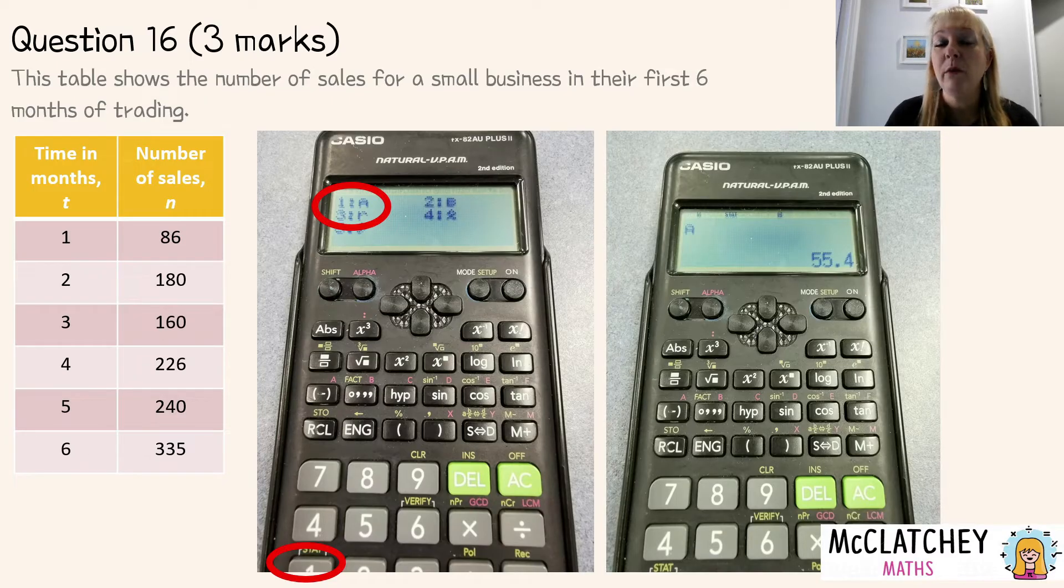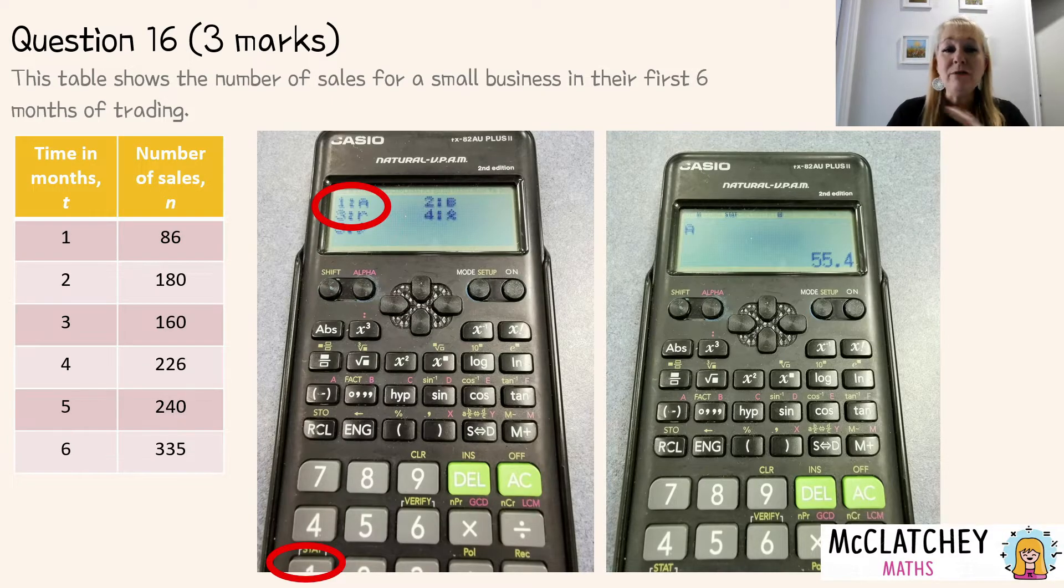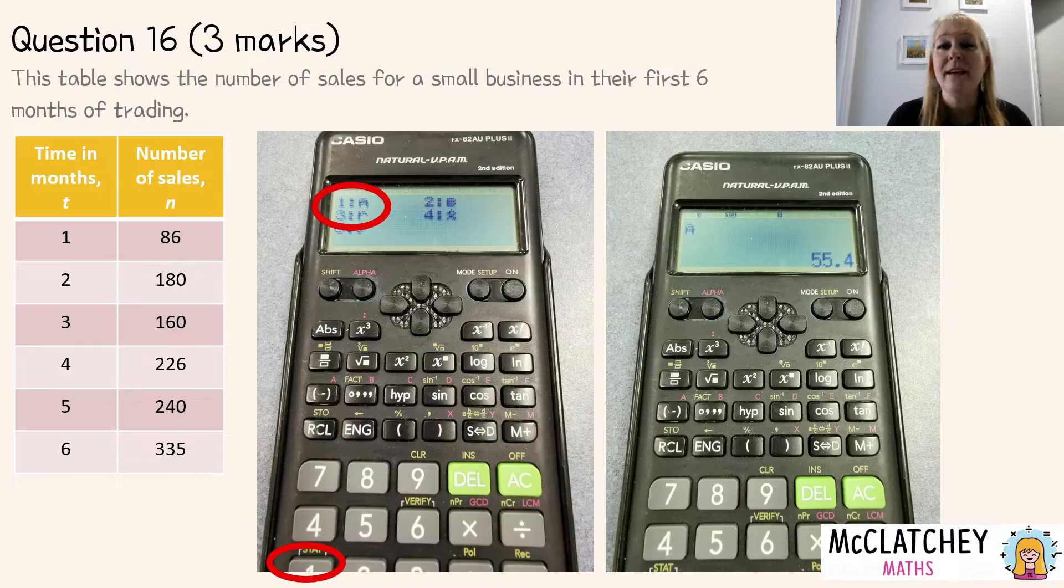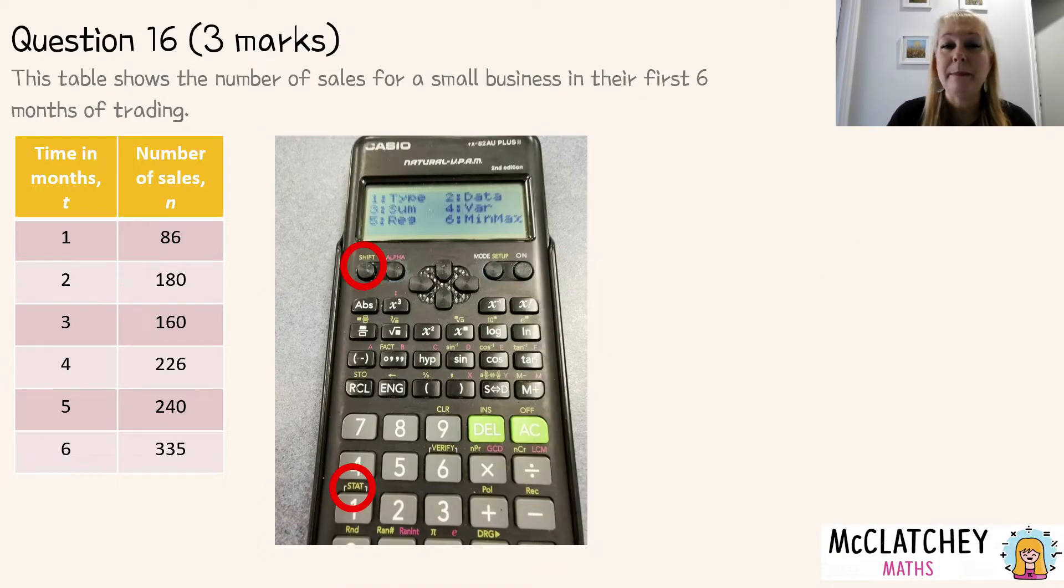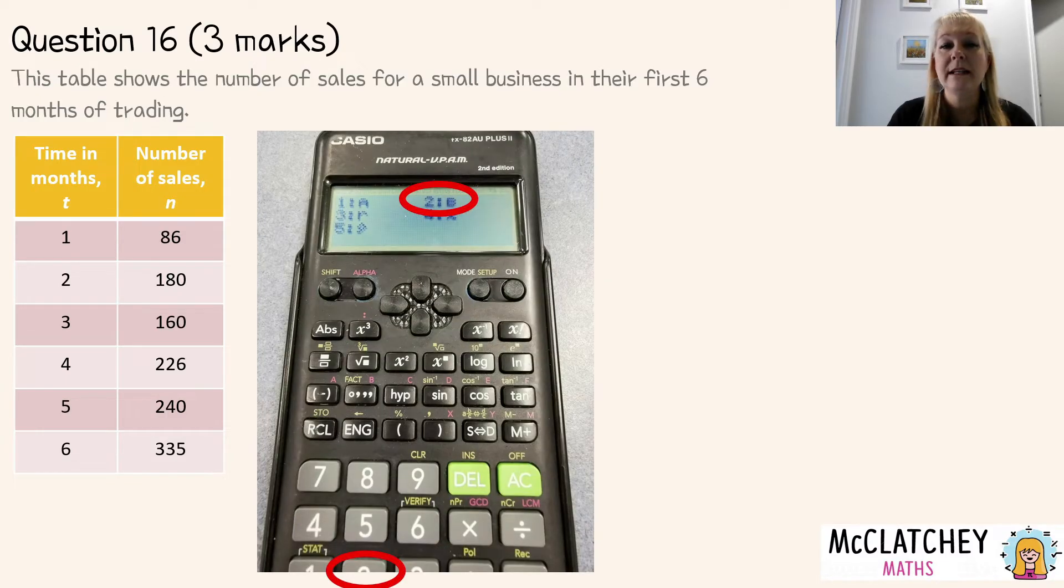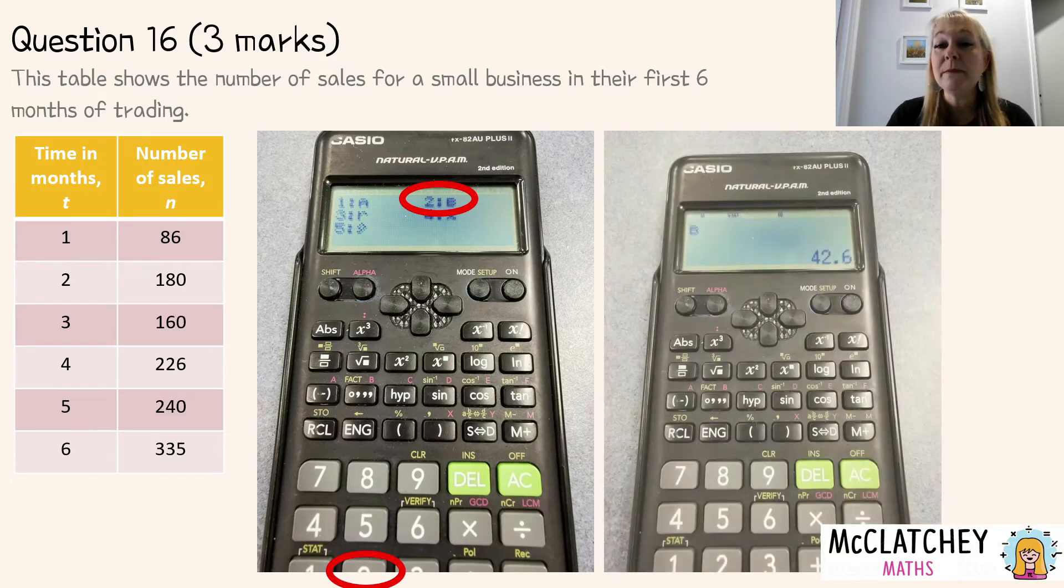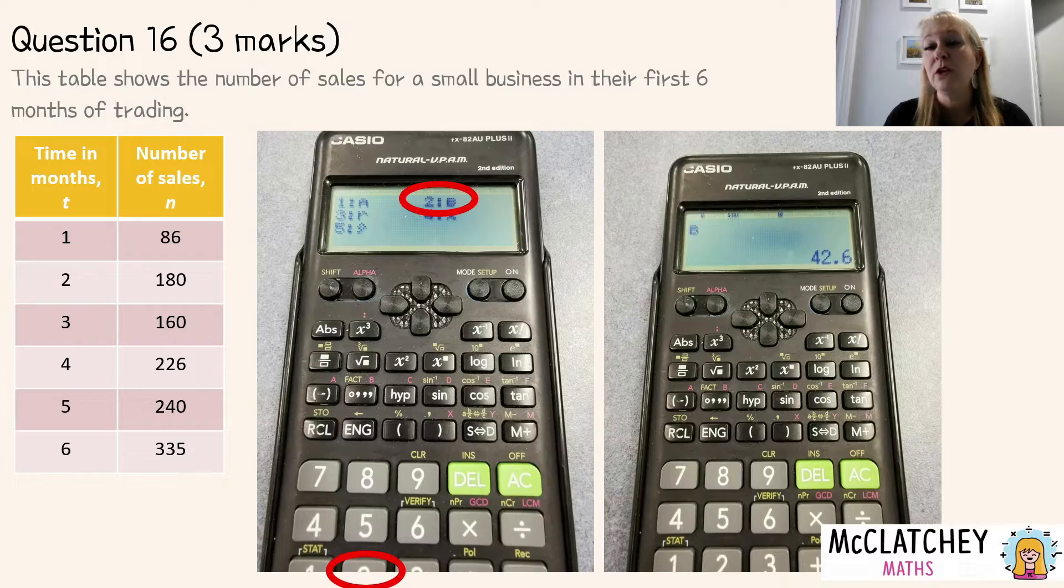We'll now get this new menu here and we're interested in a because we're looking for the formula y equals a plus bx we want to find a first. So if we press the one and then press the equals button on our calculator we're going to find that a is equal to 55.4. Now we need to repeat that last part of the process again to find b. So we go back to pressing the shift button back to pressing one for statistics. We're going to get this menu up again we're going to select five for regression then two to get b and then two on our bottom of our calculator press your equals button and you'll get b is equal to 42.6.